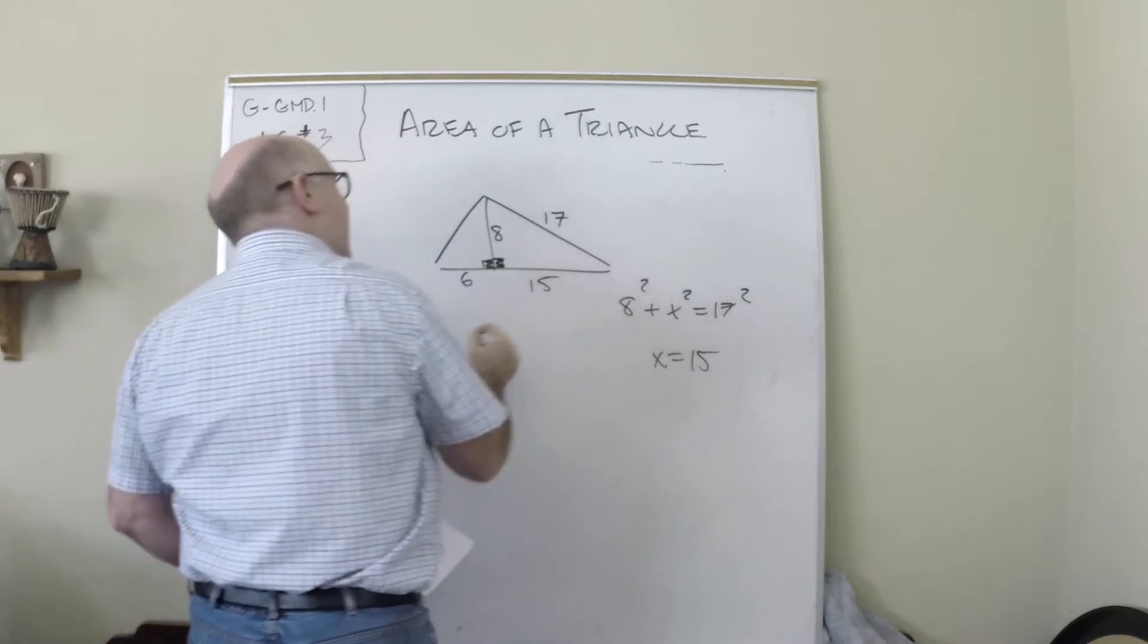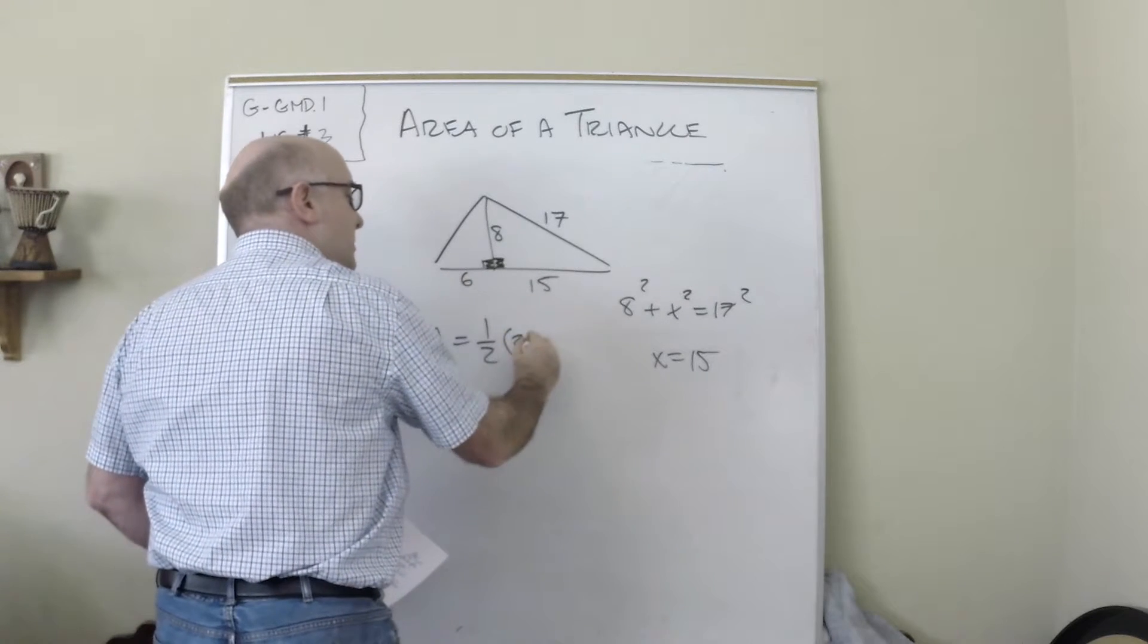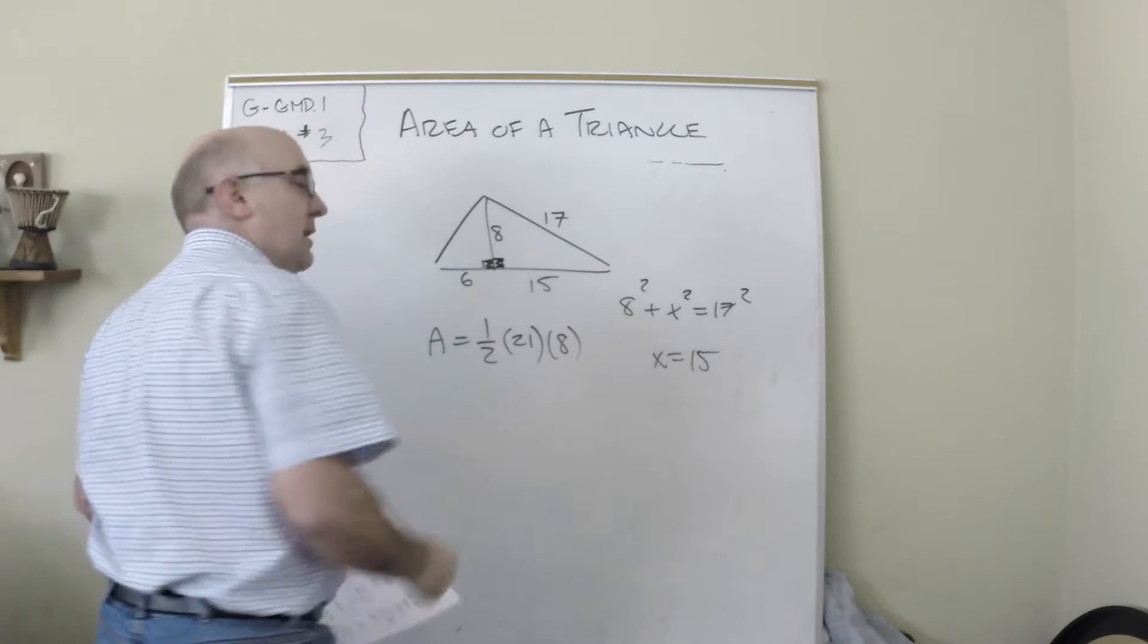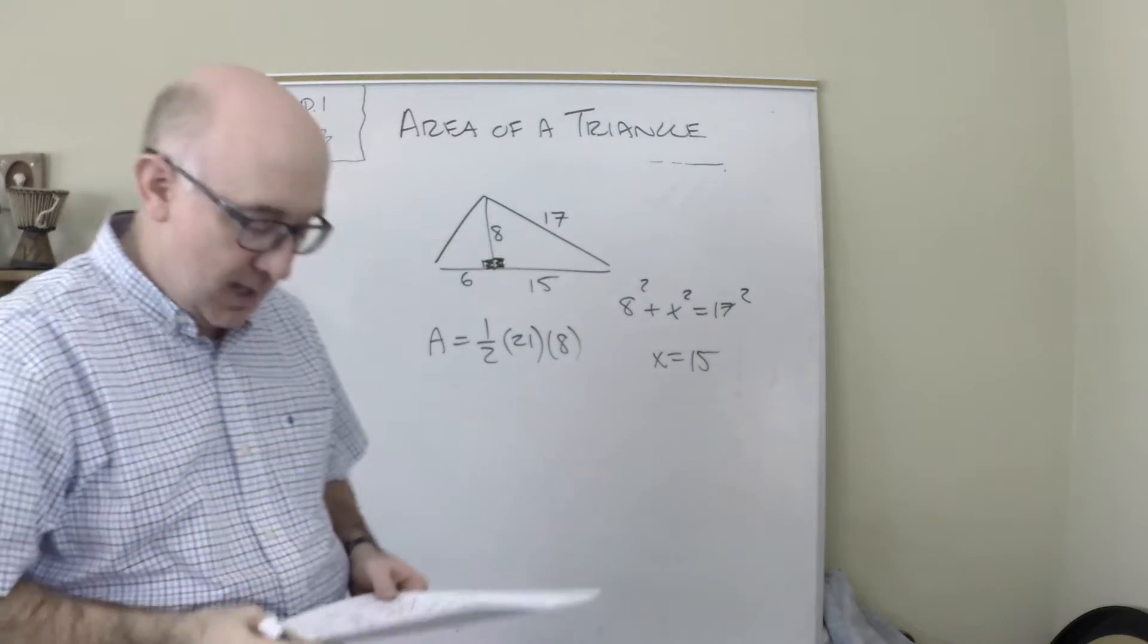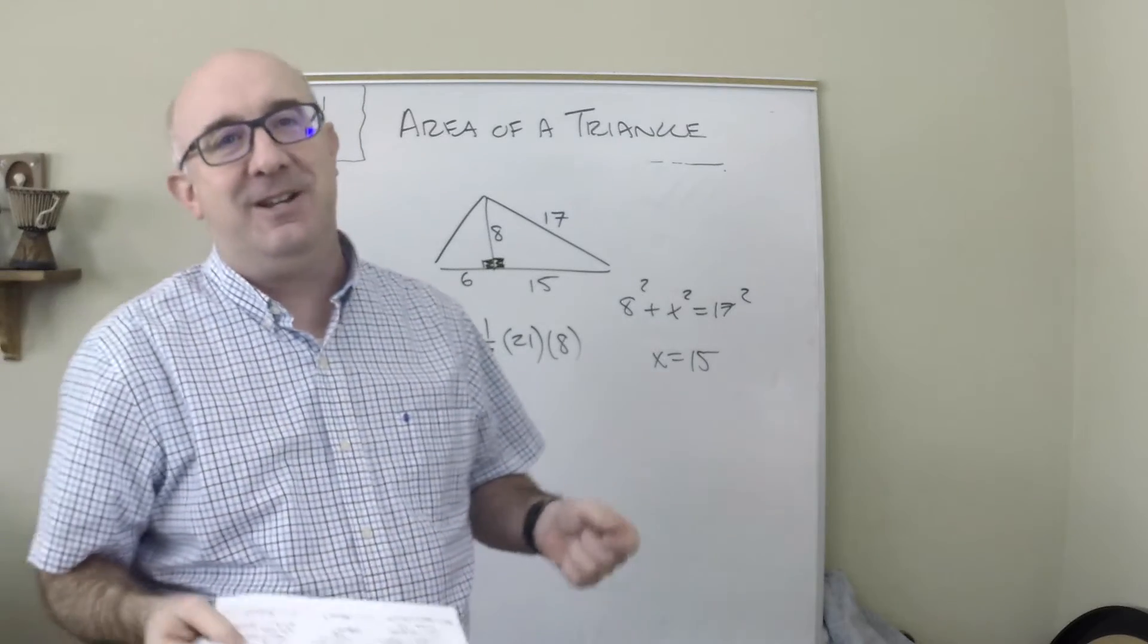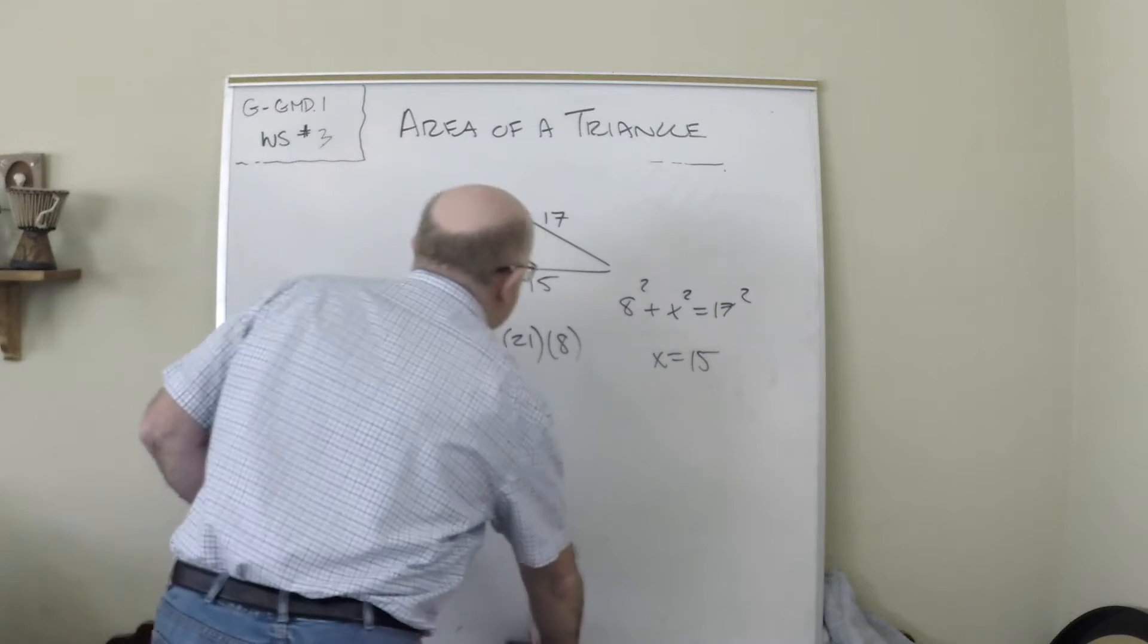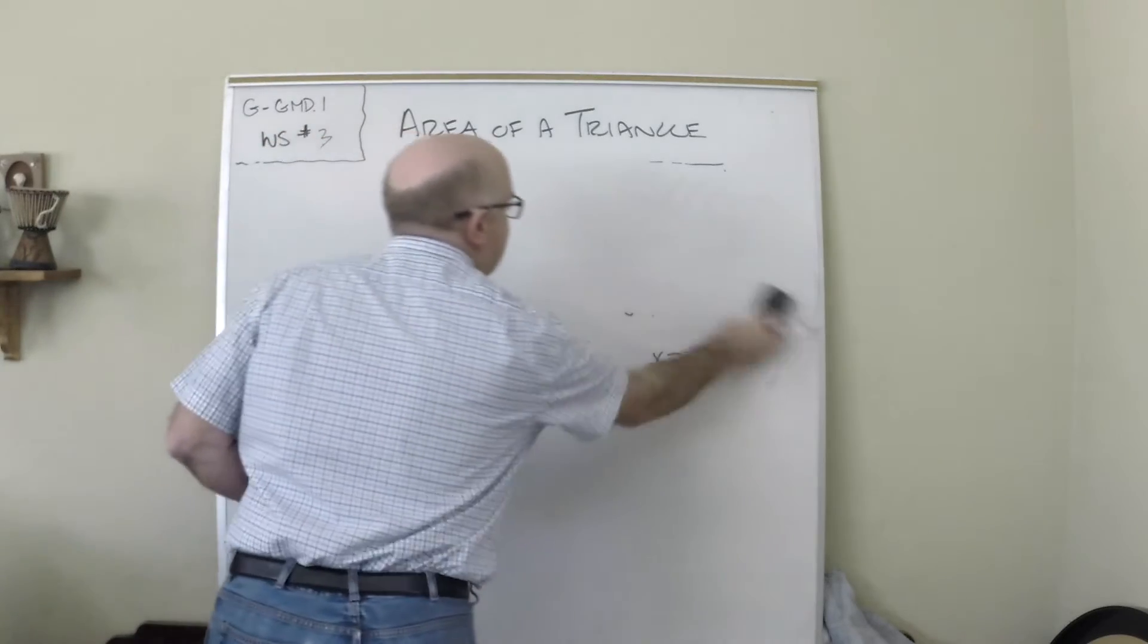So you'd say 8² + x² = 17². Solve this to find it to be 15, and now you're ready to calculate one half the base, which is 21, times the height of 8, and you'd multiply those things out. So as I look here, they're going to use 30-60-90, they're going to use Pythagoras, they're going to use a lot of things to throw you off.